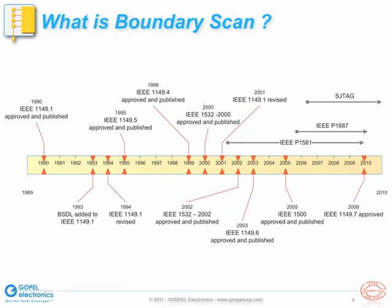The original IEEE standard defining the JTAG boundary scan test resources was ratified in 1990. JTAG stands for Joint Test Action Group, which was a group of interested parties that set out to develop the test methodology that became IEEE 1149.1. Since then, many standard development efforts have built onto the original work by reusing features defined in 1149.1.